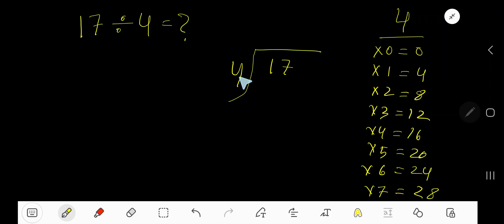17 divided by 4. Here 4 is the divisor, so we need the multiplication table of 4. 4 times 0 is 0, 4 times 1 is 4, 4 times 2 is 8, 4 times 3 is 12, 4 times 4 is 16, 4 times 5 is 20, 4 times 6 is 24. To find out the multiplication table of 4, just add 4 to the previous step: 0 plus 4 is 4, 4 plus 4 is 8, 8 plus 4 is 12, 12 plus 4 is 16, 16 plus 4 is 20.